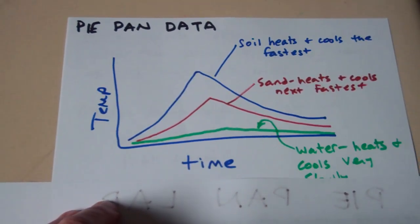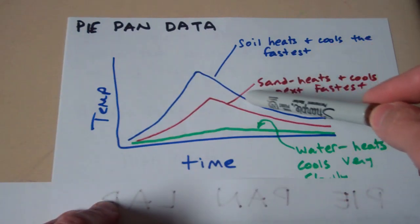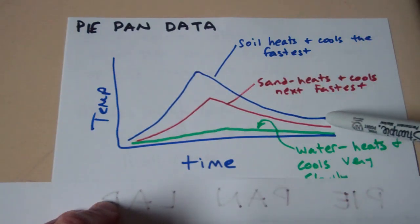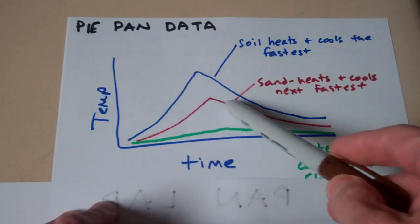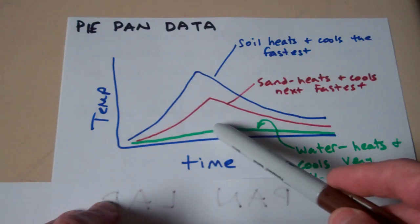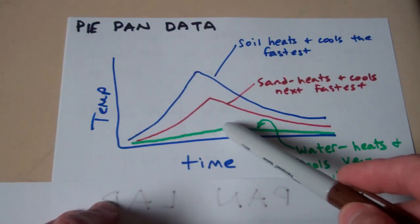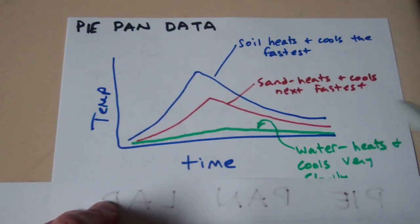The soil heated up the quickest and then when we turned off the light it cooled down also pretty quickly. The sand came in second place and then the water kind of heated up really slowly and then when we turned off the light it really didn't cool off very much. It held its temperature.